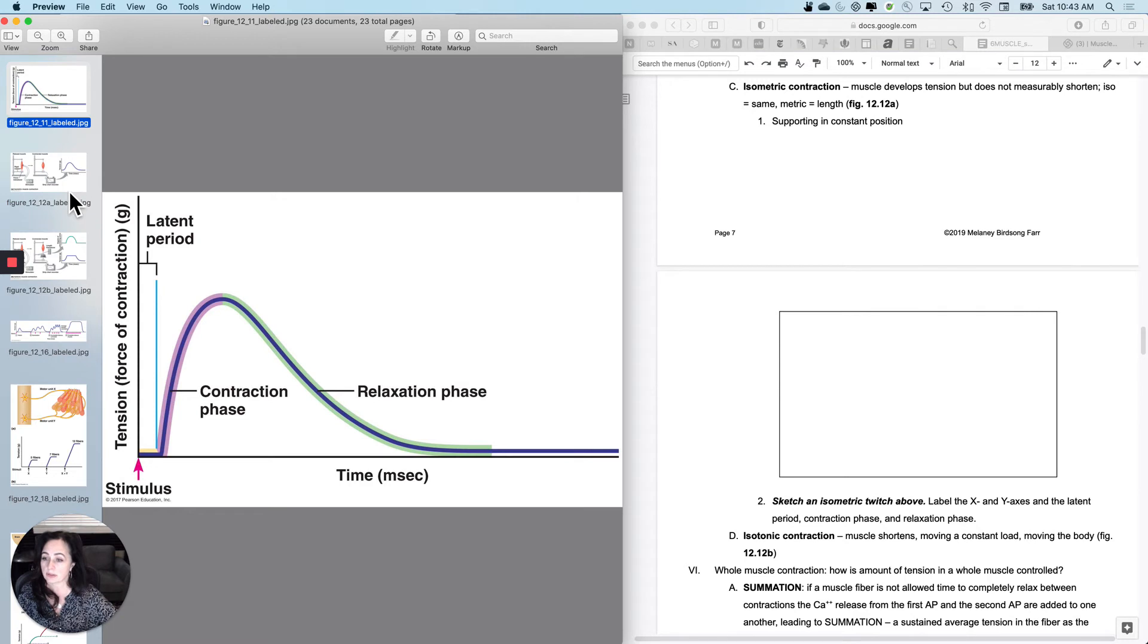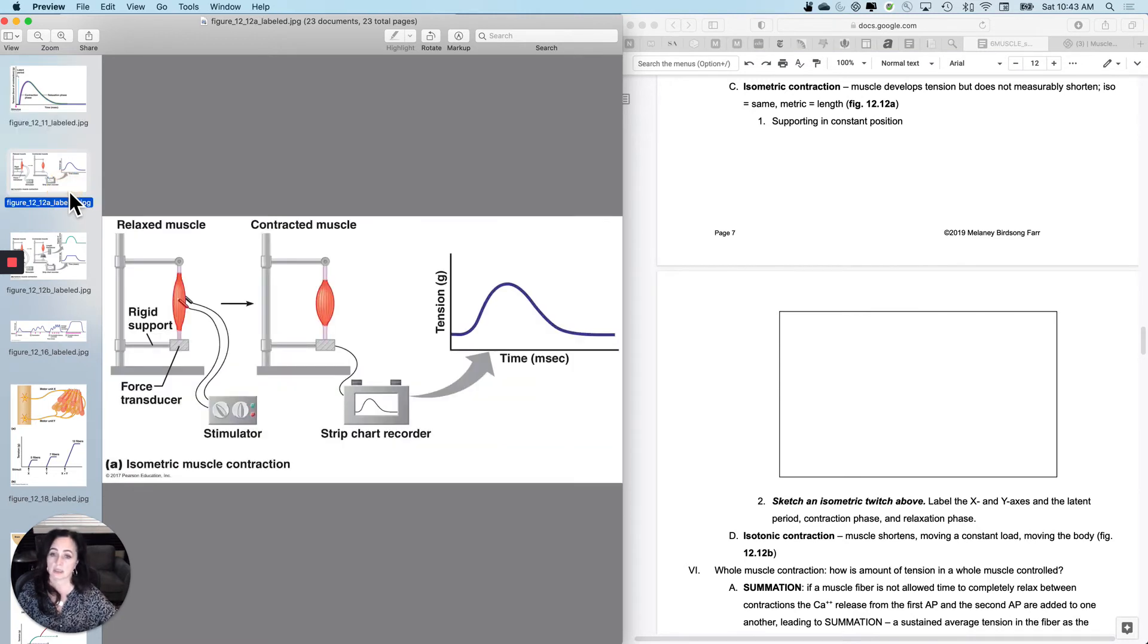So if we look at what's happening with an isometric contraction, what we see right here is this is a simulated isometric contraction in a lab. In you, it would be happening with neurotransmitters, but you can skip the whole neurotransmitter thing and just directly stimulate the skeletal muscle fiber to threshold. So I've got a stimulator. I've got a force transducer, but I have a rigid support that this muscle doesn't have the capacity to overcome. So what's going to happen is I'm going to stimulate the muscle.